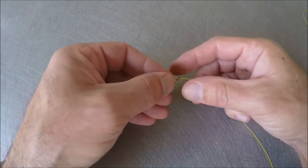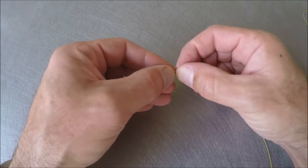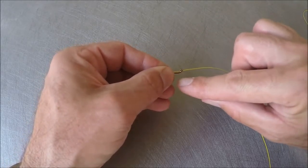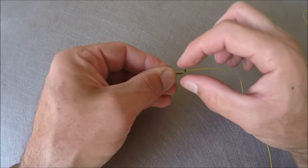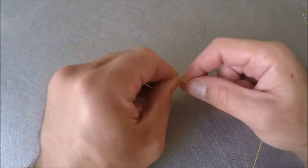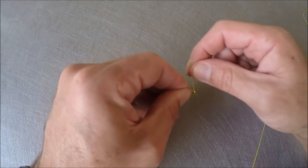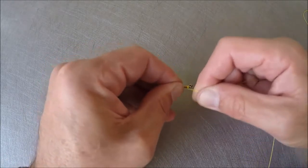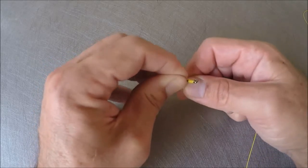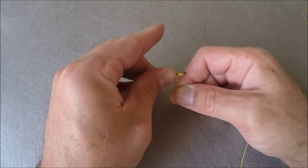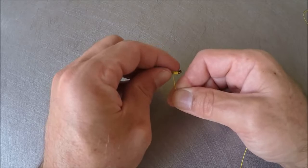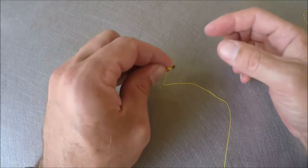Now I'm gonna pinch that down with my fingers and start making wraps. When I wrap, I'm gonna wrap behind the hook eye keeping it close, and I'm gonna put one wrap behind the other working it back towards the bend. So there's one, two, three, four, five, six, and seven. Then I'm gonna simply pinch it with my index finger to hold it down just like that.